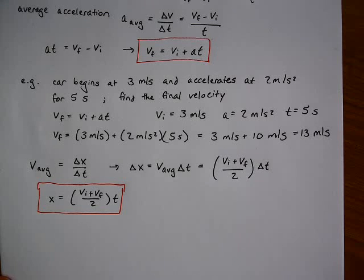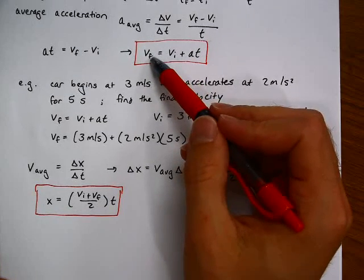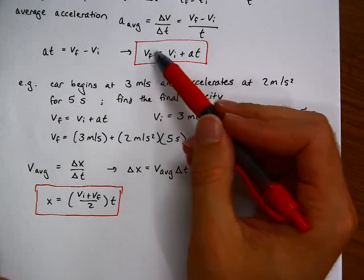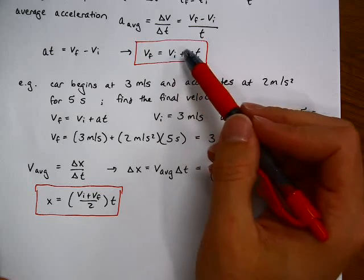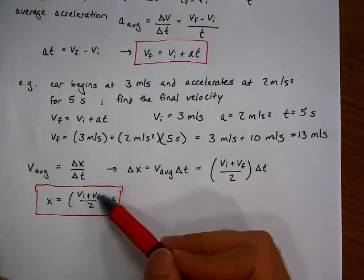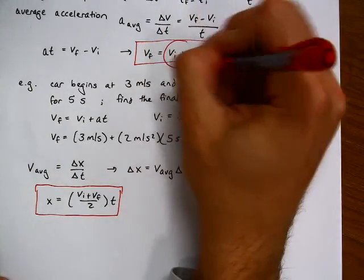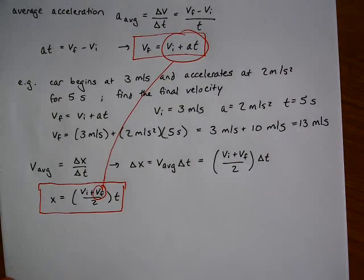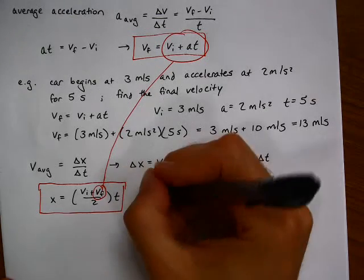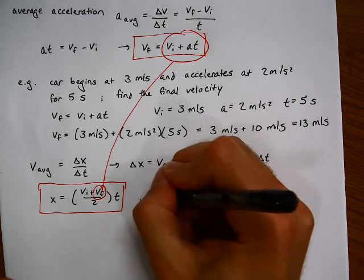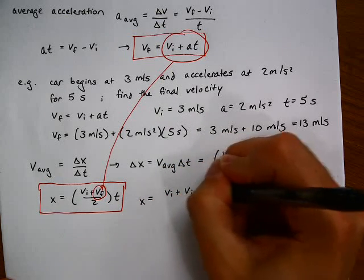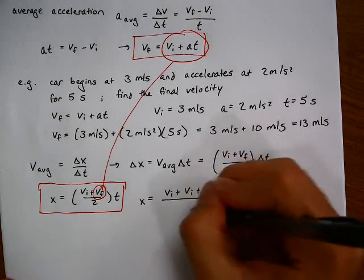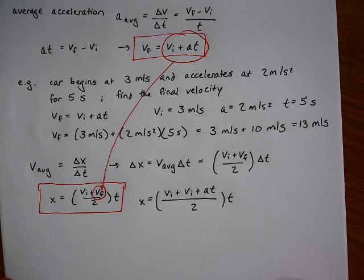The third equation that we sometimes need we get from taking this first equation and making a substitution. We plug in Vi plus At in for final velocity and solve for x. Making that substitution.